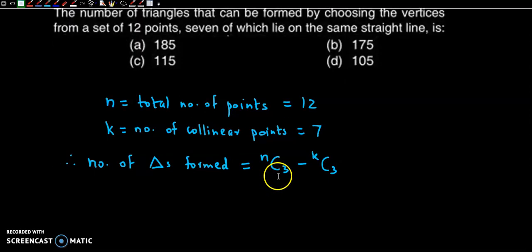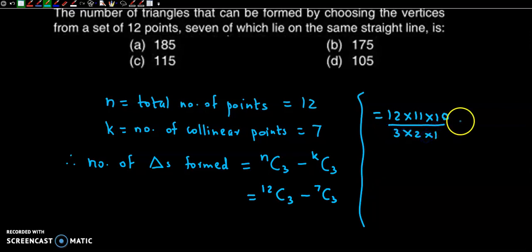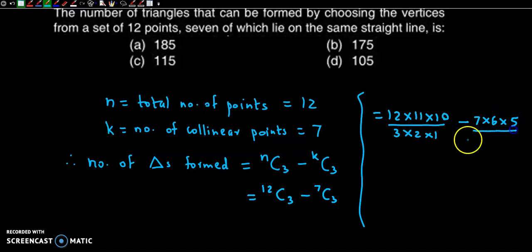Substituting the values, we get 12C3 minus 7C3. Calculating 12C3: it equals 12 × 11 × 10 upon 3 × 2 × 1. And 7C3 equals 7 × 6 × 5 upon 3 × 2 × 1.